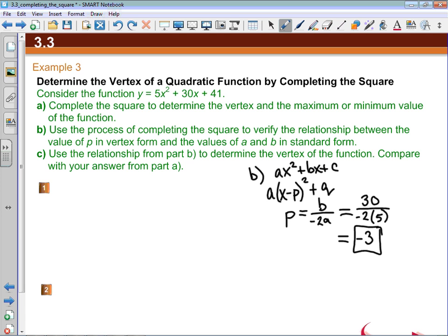So when we are, and we'll do this right away here in part a, converting this into vertex form, we should expect our p value to be negative 3.